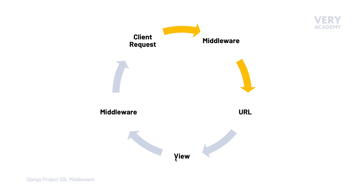In this course, we're going to build the view first and then work backwards to create the URL. Once Django has determined and matched the client request to a URL, it will be sent off to the view. Think of the view as the actual logic — the business logic — the thing that's going to perform some sort of action. In the view we have code which will perform the action expected from the request.